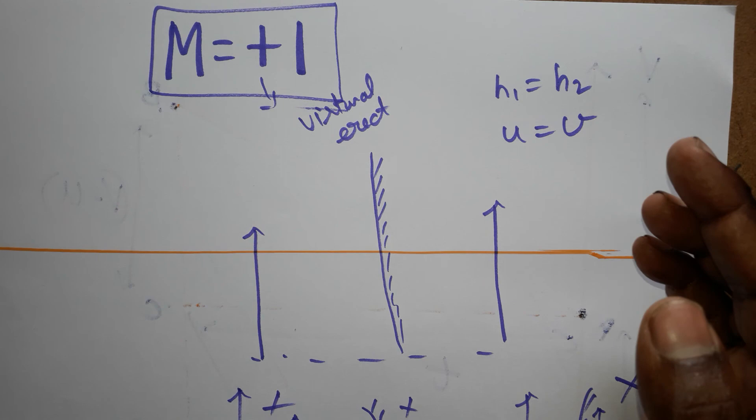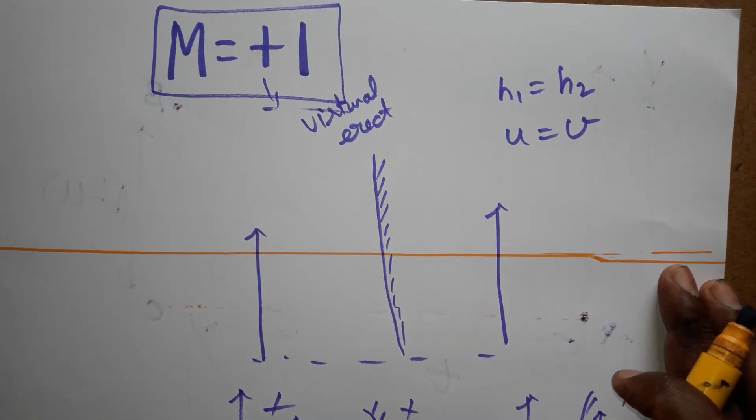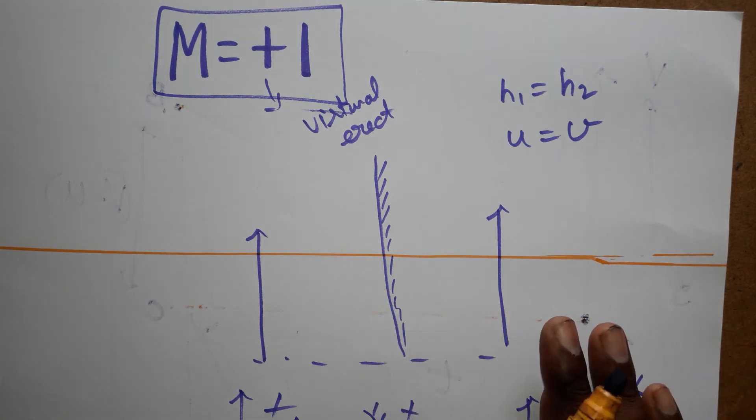The image will be erect and virtual. Object height, image height will be same. Object distance, image distance will be same. And also one more thing you can observe for plane mirror, it has the lateral inversion. That is a difference.